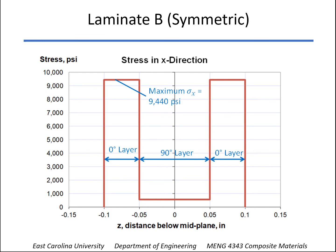And so when we look at the stresses in the X direction, notice that the maximum stress is much lower. It's 9,000 and some psi in the zeros. Of course, much lower in the 90 degree because the stiffness is that much lower. And you see no bending. You see just the flat profiles of the stresses. The stresses are constant within each layer.